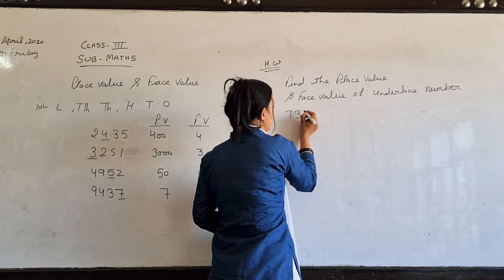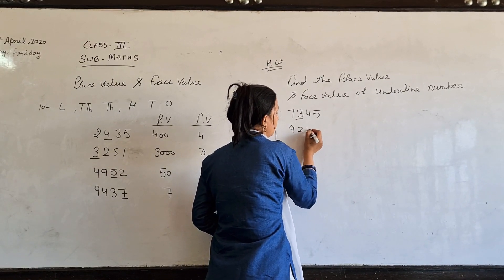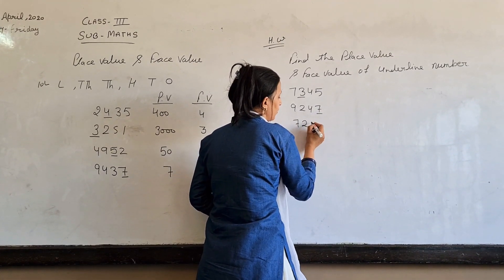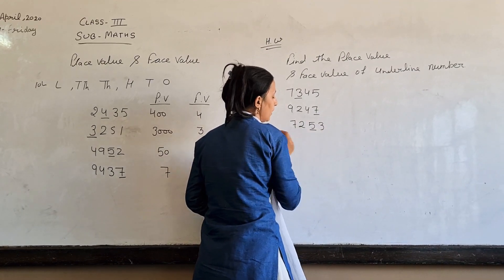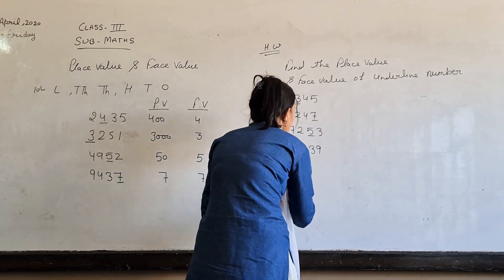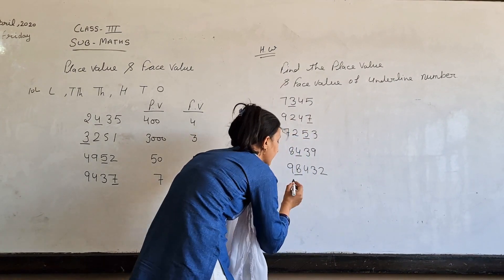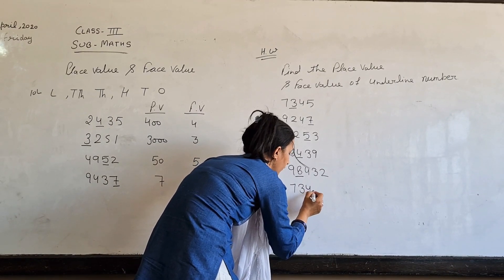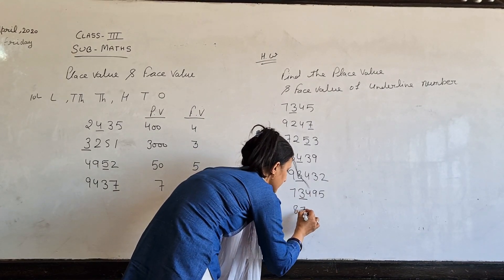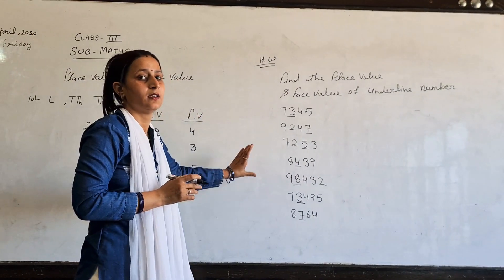7, 3, 4, 5. 9, 2, 4, 7, 7. 2, 5, 3. 8, 4, 3, 9. 9, 8, 4, 3, 2, 2. I have one formula line: 7, 3, 4, 9, 5. I have 3 formula line: 8, 7, 6, 4. I have 7 formula line.